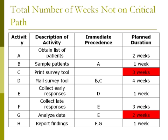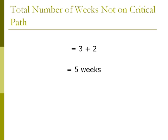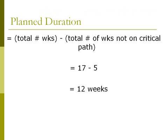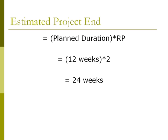Shown in red, activities C and G do not lie on the critical path, so the sum of their weeks will be subtracted from the total weeks. The total number of weeks not on the critical path is therefore five weeks. So, putting the two previous calculations together, we can find the planned duration, which is 17 minus 5, or 12 weeks. Now that we have the planned duration, we can calculate the estimated project end: 12 times 2 is 24 weeks. The project is estimated to last 24 weeks, which is actually twice as long as expected based on how long it took for the first three activities to be completed.